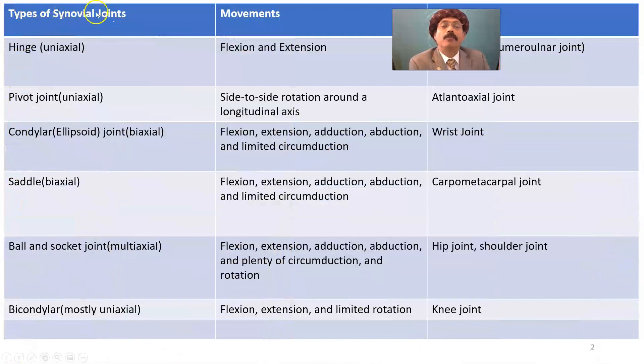Now, types of synovial joint: we have hinge joint, pivot joint, condylar joint, saddle joint, ball and socket joint, and bicondylar joint.